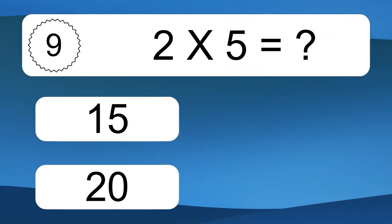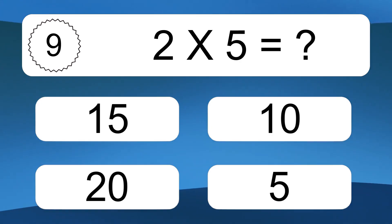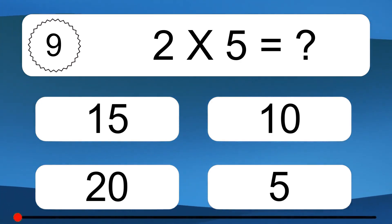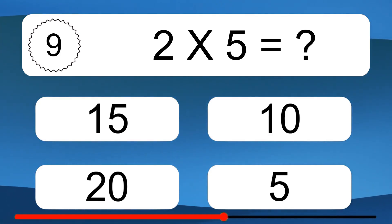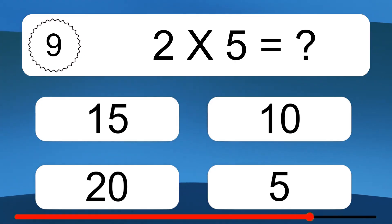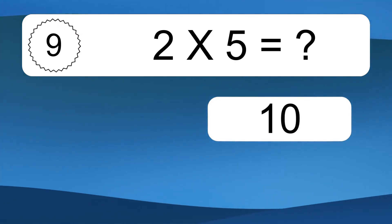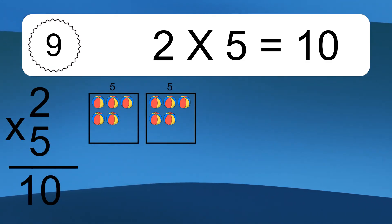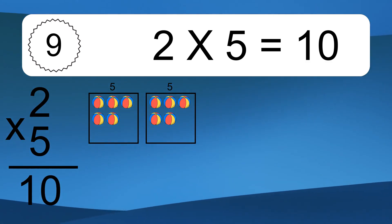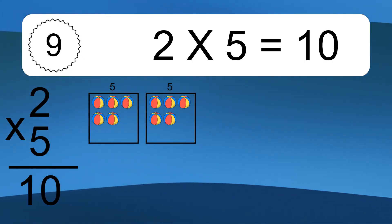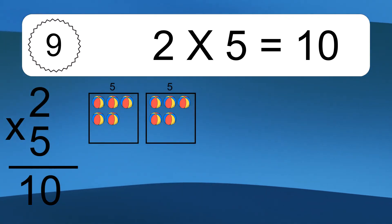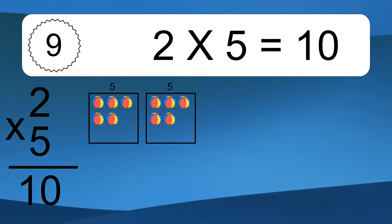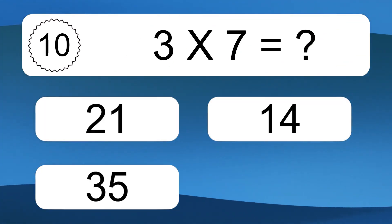2 times 5 equals what? 2 times 5 equals 10. We have 2 boxes, and each box has 5 colorful balls inside. If you count all the balls in all the boxes together, you will have 2 times 5 balls. This equals 10 balls.